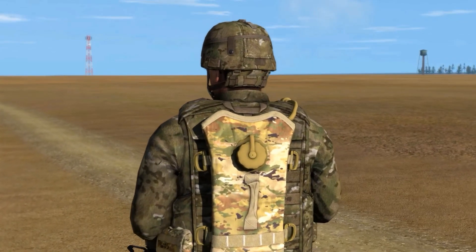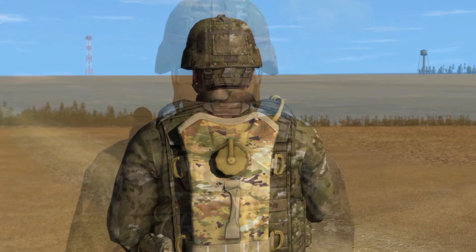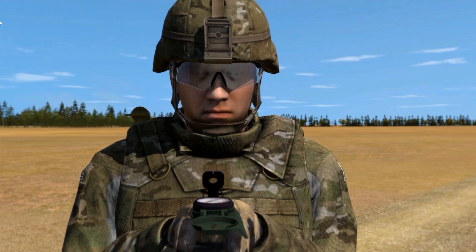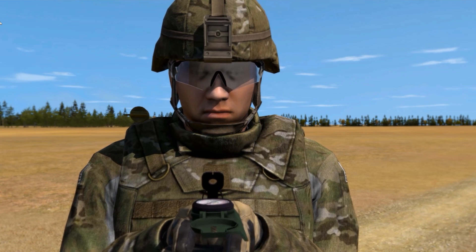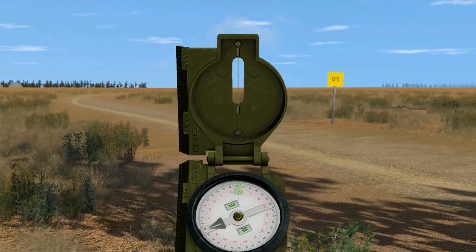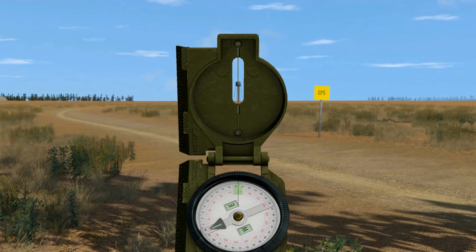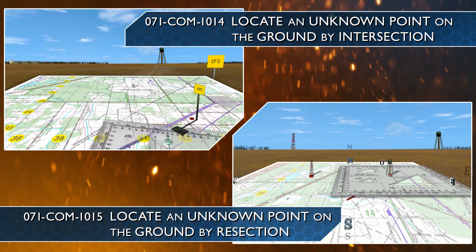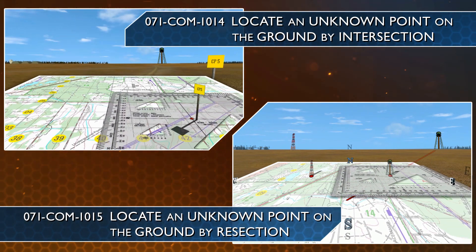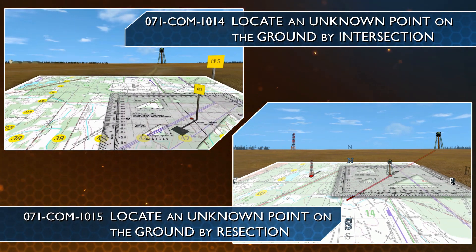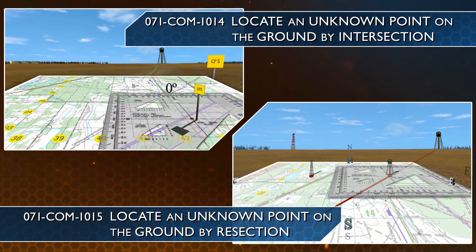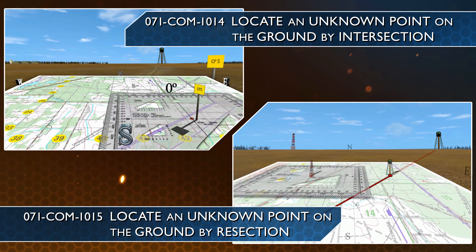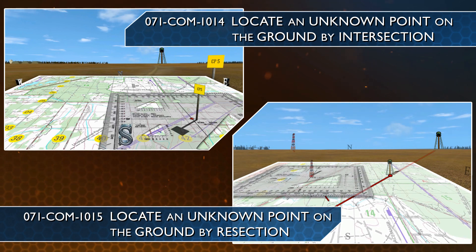If there are no recognizable terrain features but a compass is available, you may have to use field expedient methods to orient your map. Refer to task: Locate an Unknown Point on the Ground by Intersection, and Locate an Unknown Point on the Ground by Resection, for some examples of field expedient methods.